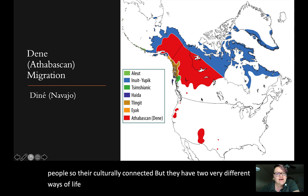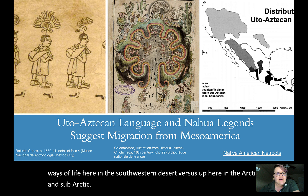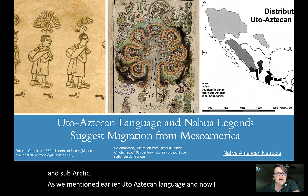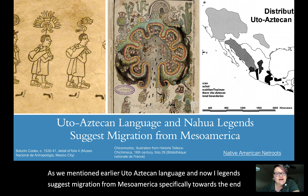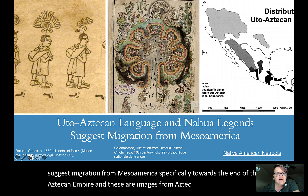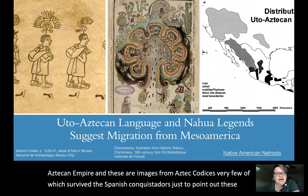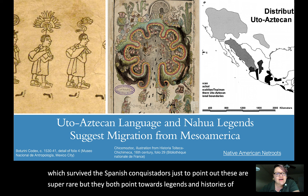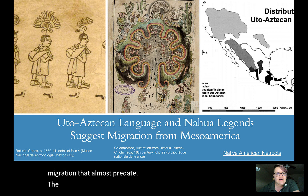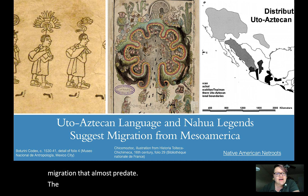They're culturally connected but have two very different ways of life — in the southwestern desert versus the Arctic and subarctic. Uto-Aztecan language and Nahua legends suggest migration from Mesoamerica, specifically toward the end of the Aztec empire. These images from Aztec codices — very few of which survived the Spanish conquistadors — point toward legends and histories of migration that predate even the peak of the Aztec empire, since there was certainly movement happening before the conquistadors arrived.